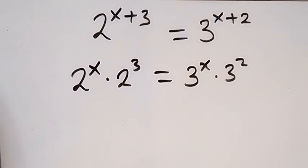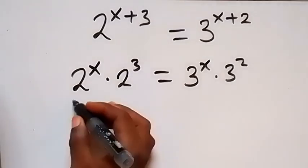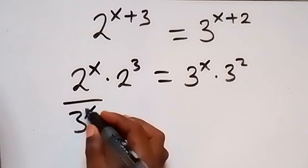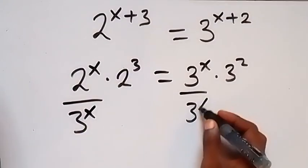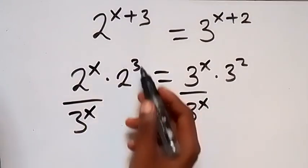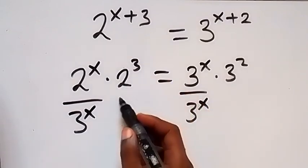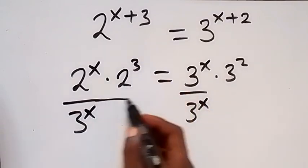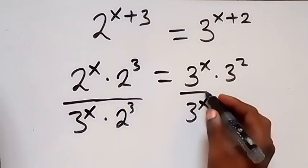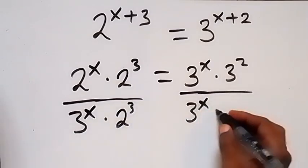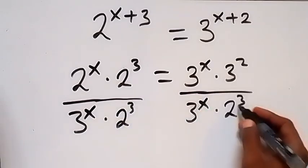Then let's separate the power of x on one side and the terms without x on the other side. That means we divide this side by 3 raised to power x, also divide this side by 3 raised to power x, and we remove that term. Then divide this side again by 2 raised to power 3, and also divide this side by 2 raised to power 3.